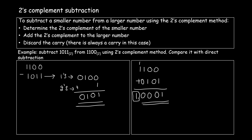That 5th digit is a carry. Since we got a carry, we discard it, and the result is 0001.